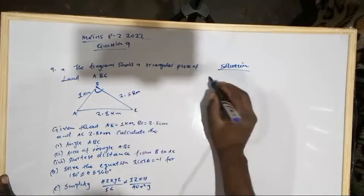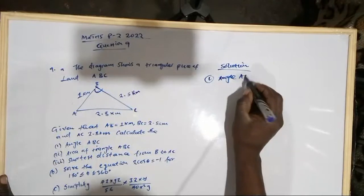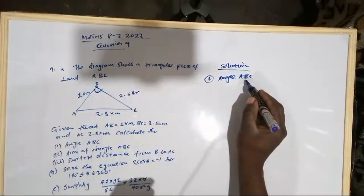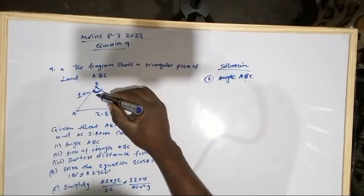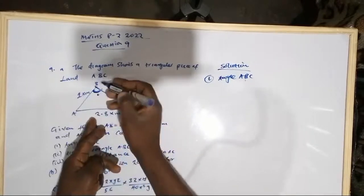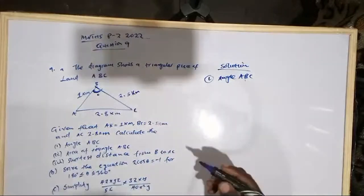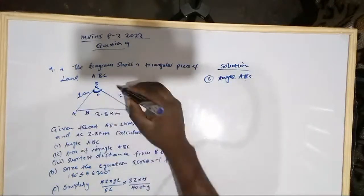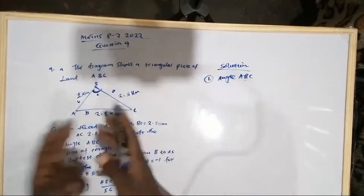For solution 1a, we are told to calculate angle ABC. To find angle ABC, you follow the letter which is in between — that is the angle you are looking for. We denote the opposite of B as small letter b, opposite of A as small letter a, and opposite of C as small letter c.